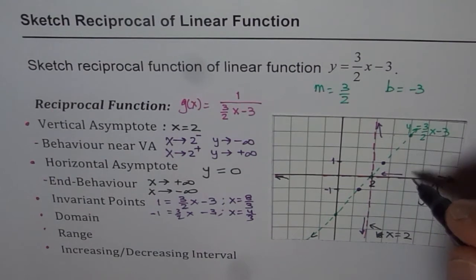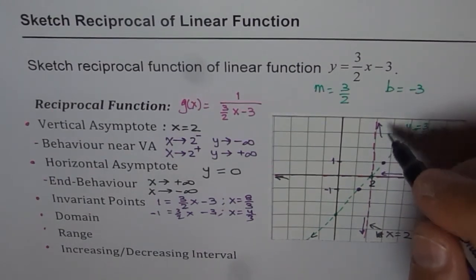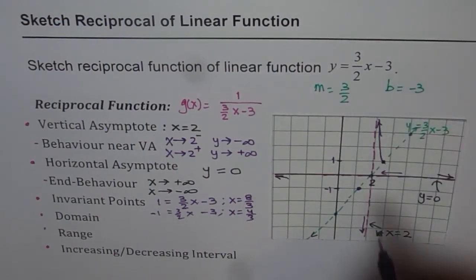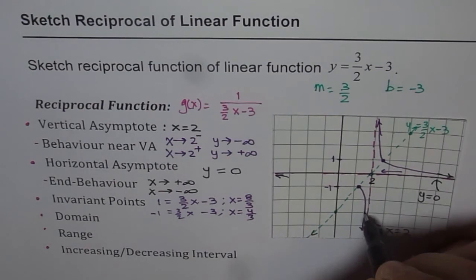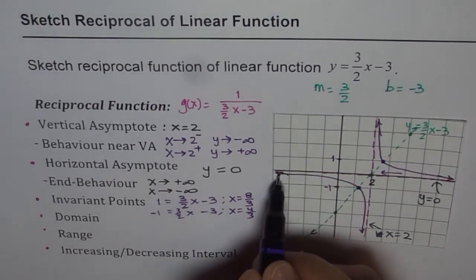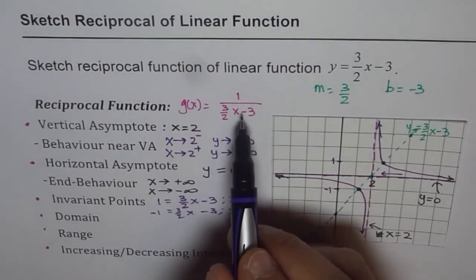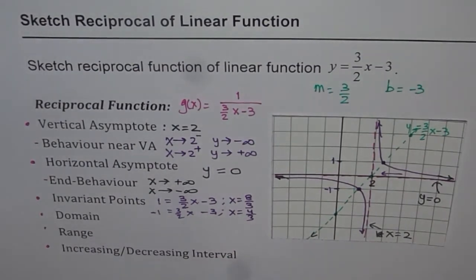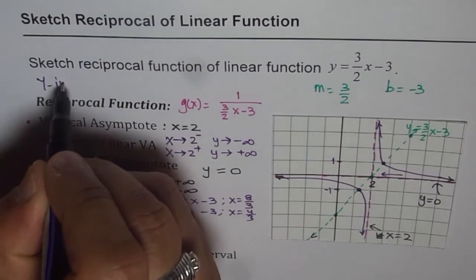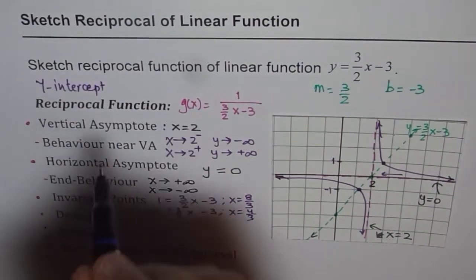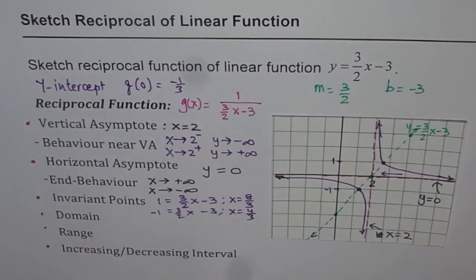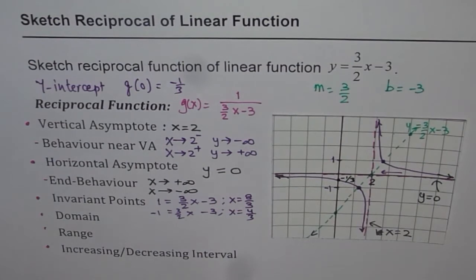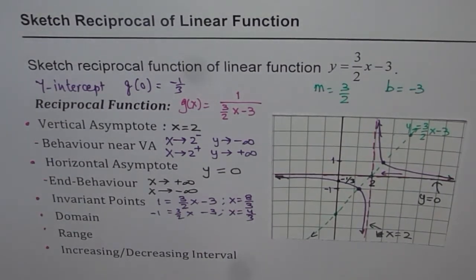Once we have these invariant points, we can sketch the graph. The reciprocal function looks like 1 over x — we connect these points with a smooth curve. One important point we should also find is the y-intercept. Putting x equals 0 into g(x) gives minus 1 over 3. So the function crosses the y-axis at minus 1 over 3. That gives us a good sketch of the reciprocal of this linear function.